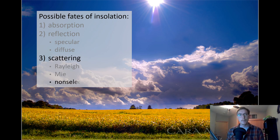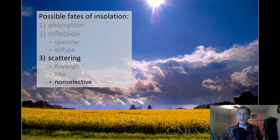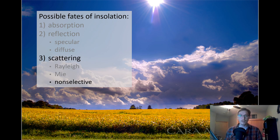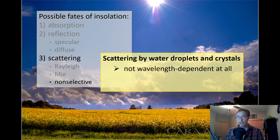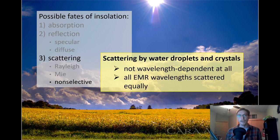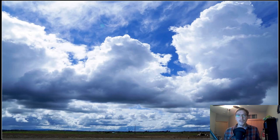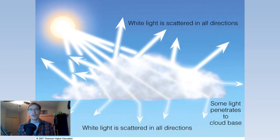The third type is non-selective scattering, which gets its name from the fact that all wavelengths are scattered about equally. This scattering causes fog and clouds to appear white to our eyes because blue, green, and red light are all scattered in approximately equal quantities — and blue plus green plus red gives us white light. This is scattering by water droplets and crystals, not wavelength-dependent at all. Everything is scattered equally, which gives us those beautiful billowy white clouds.